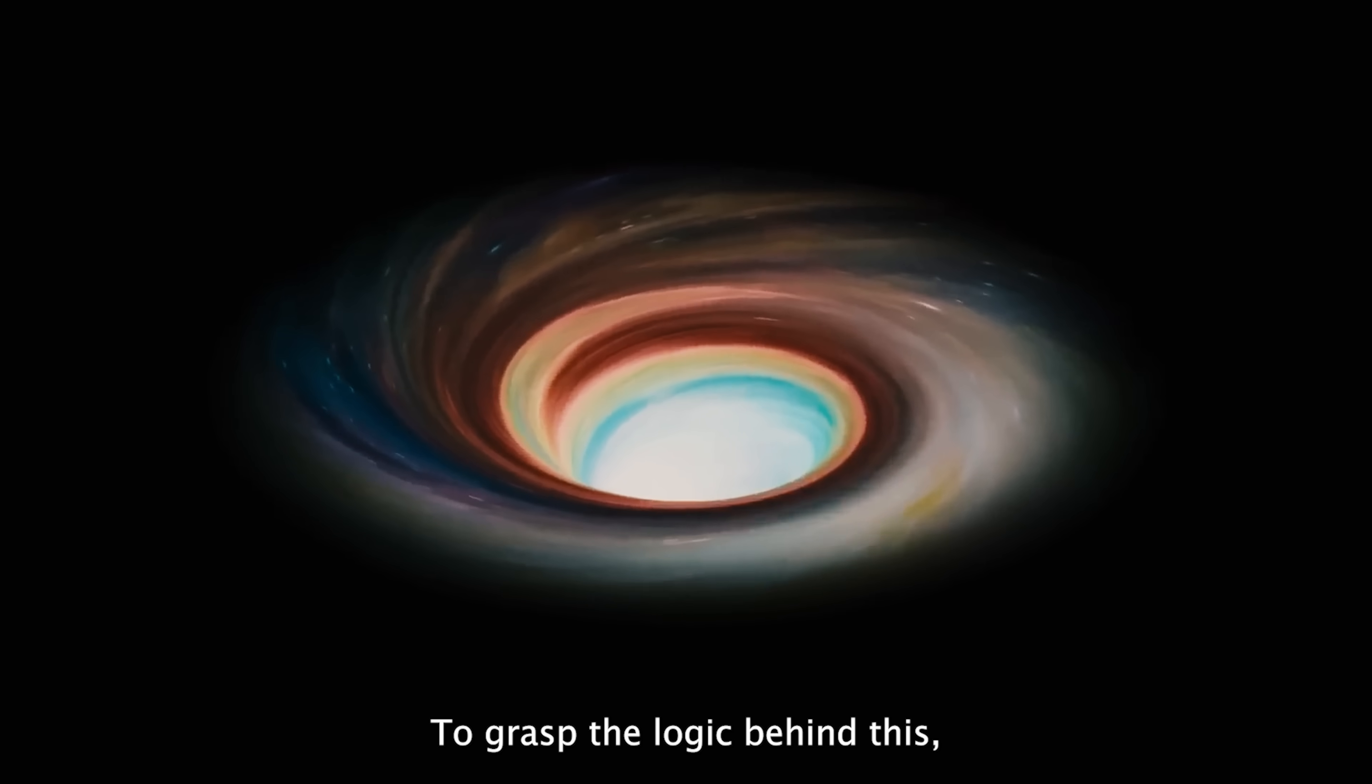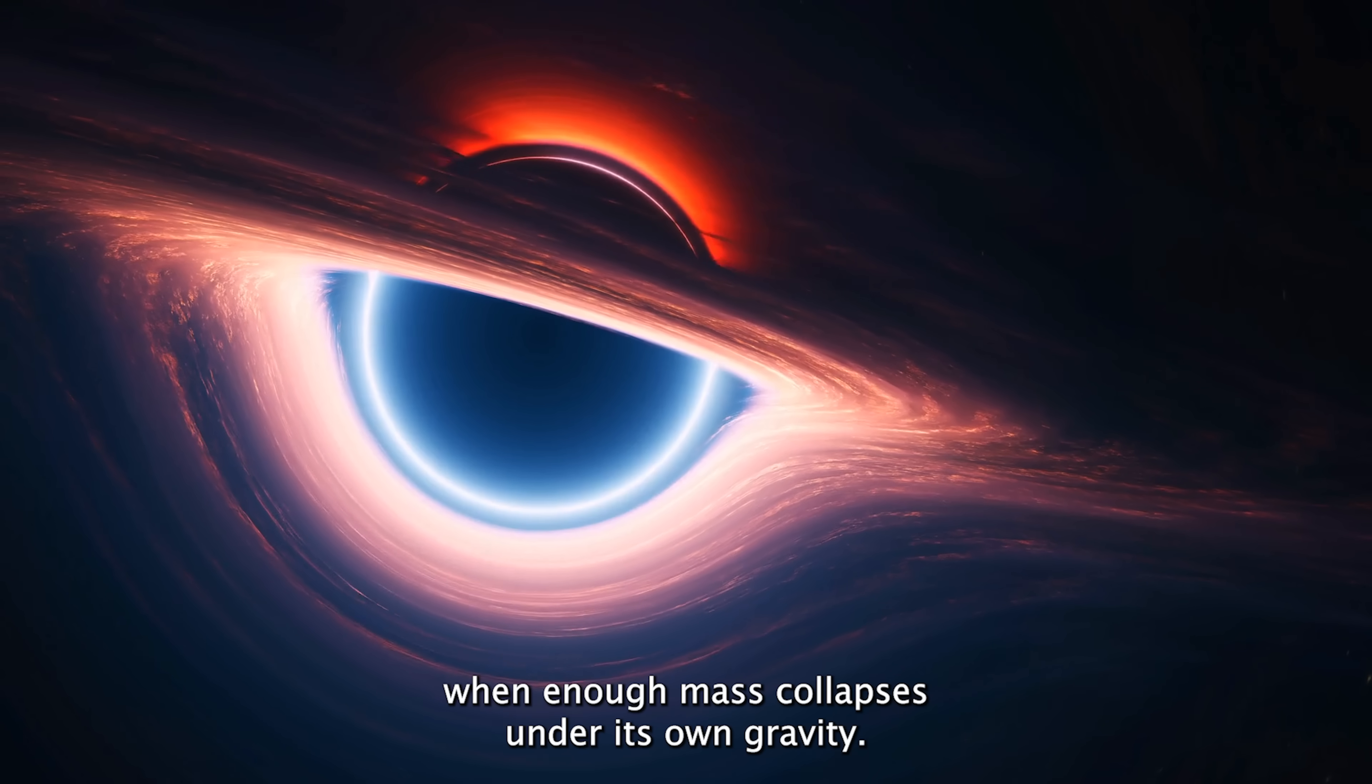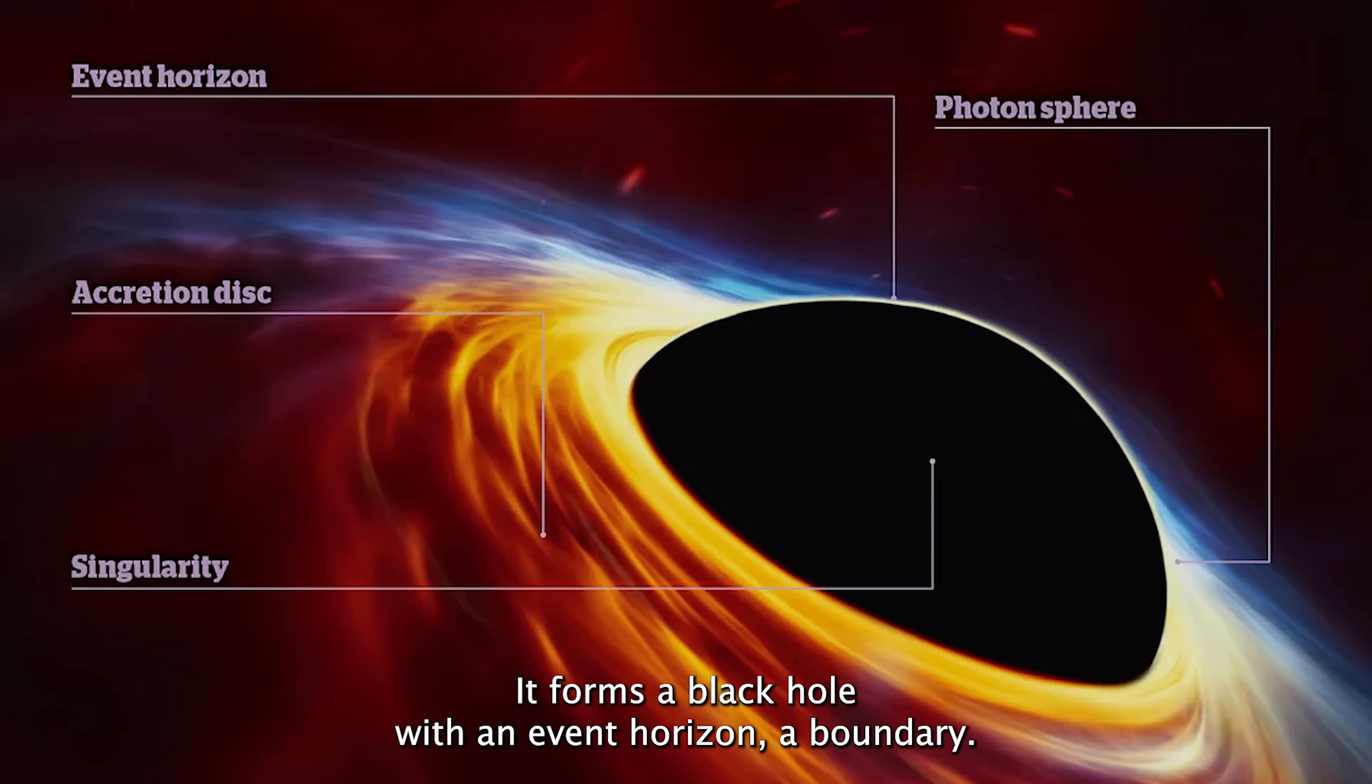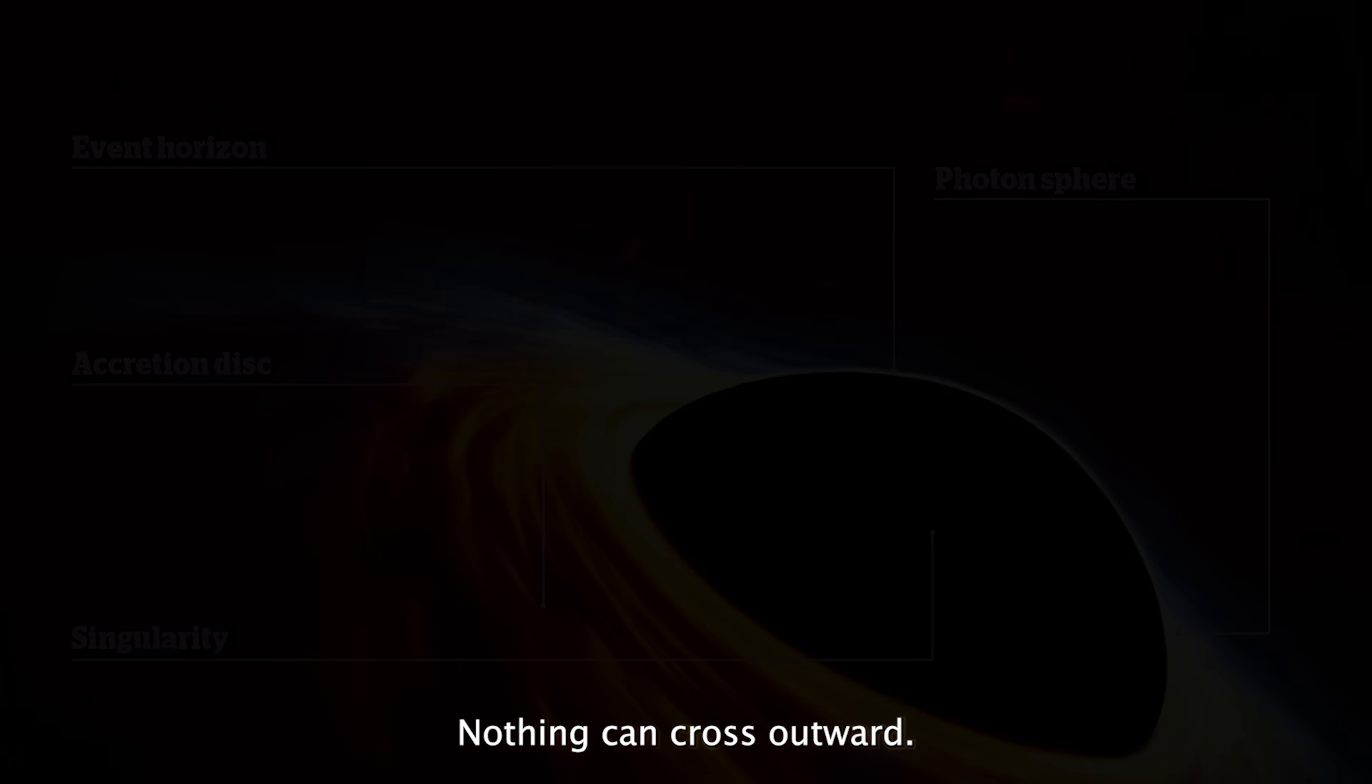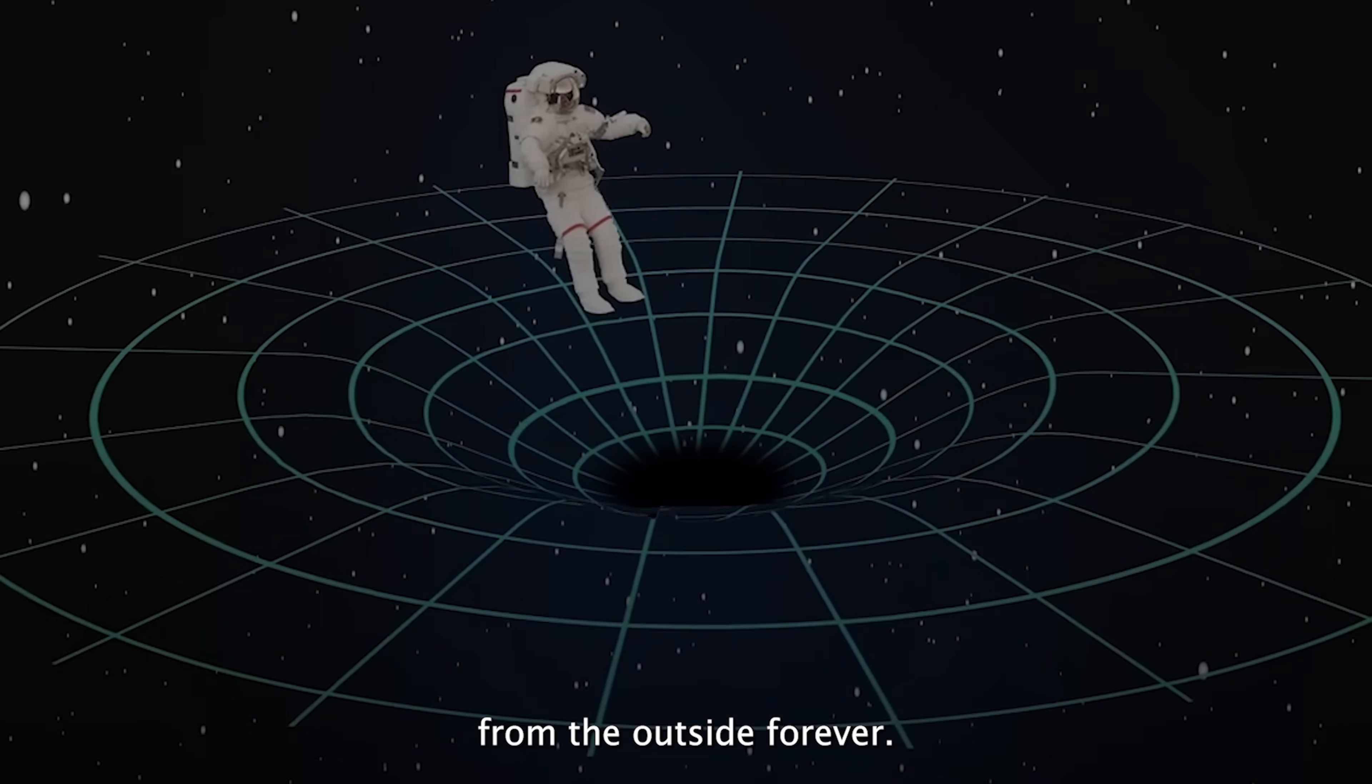To grasp the logic behind this, we need to revisit how black holes behave. When enough mass collapses under its own gravity, it forms a black hole with an event horizon, a boundary nothing can cross outward. Anything falling past that invisible edge is sealed off from the outside forever.